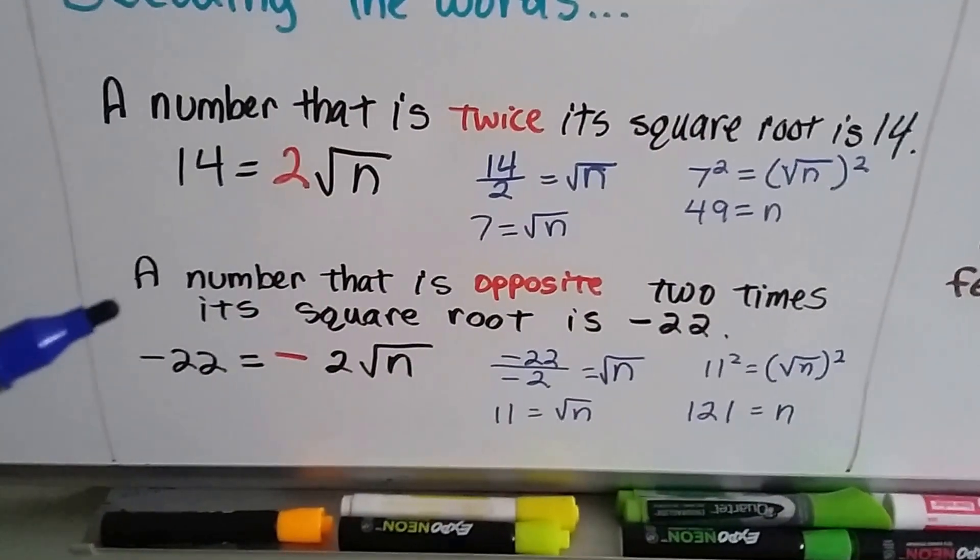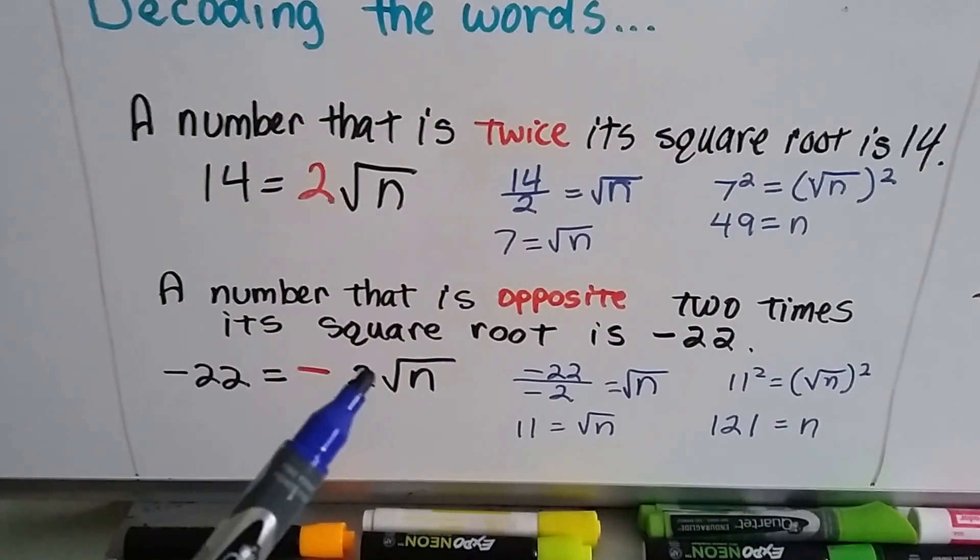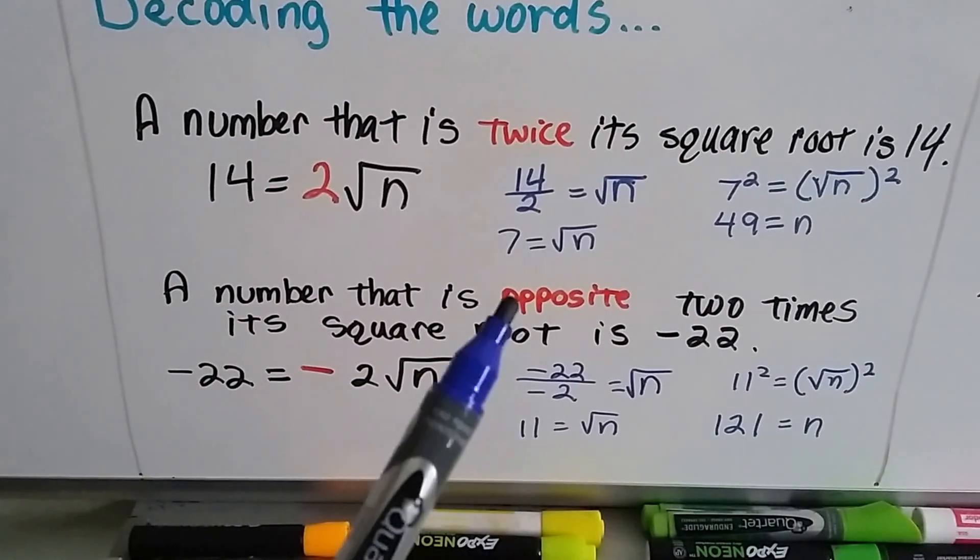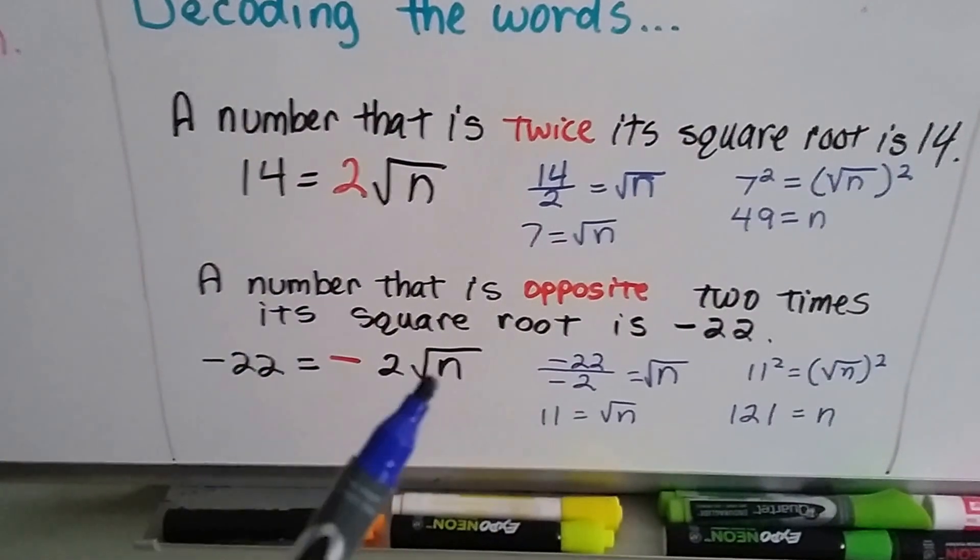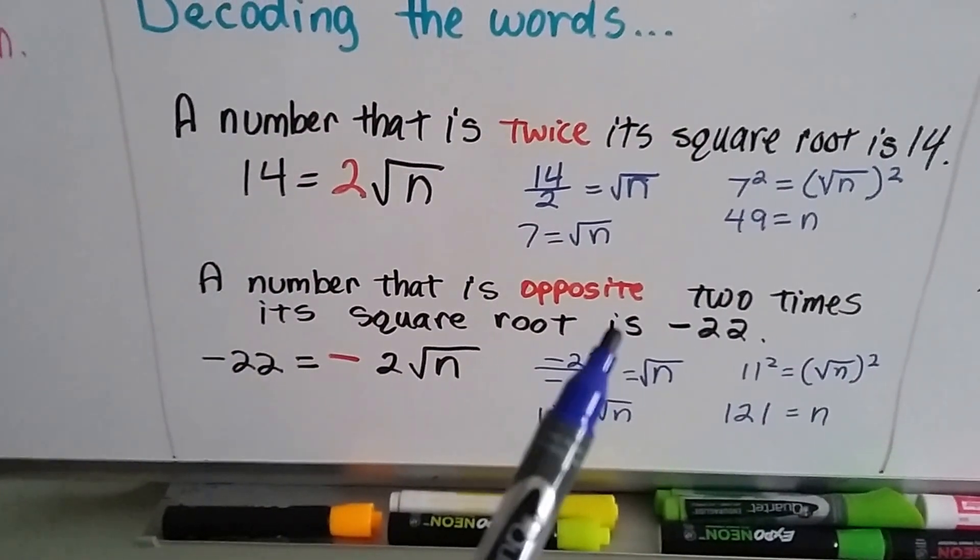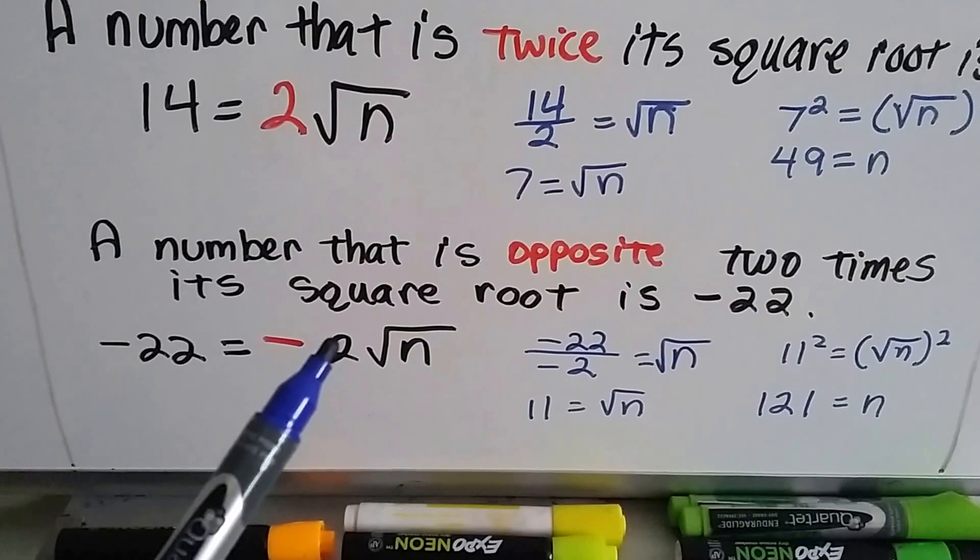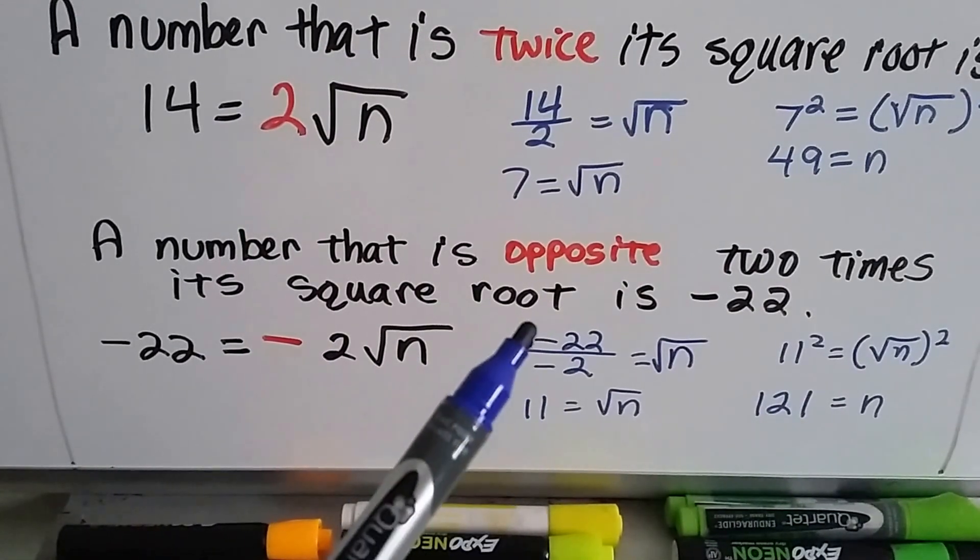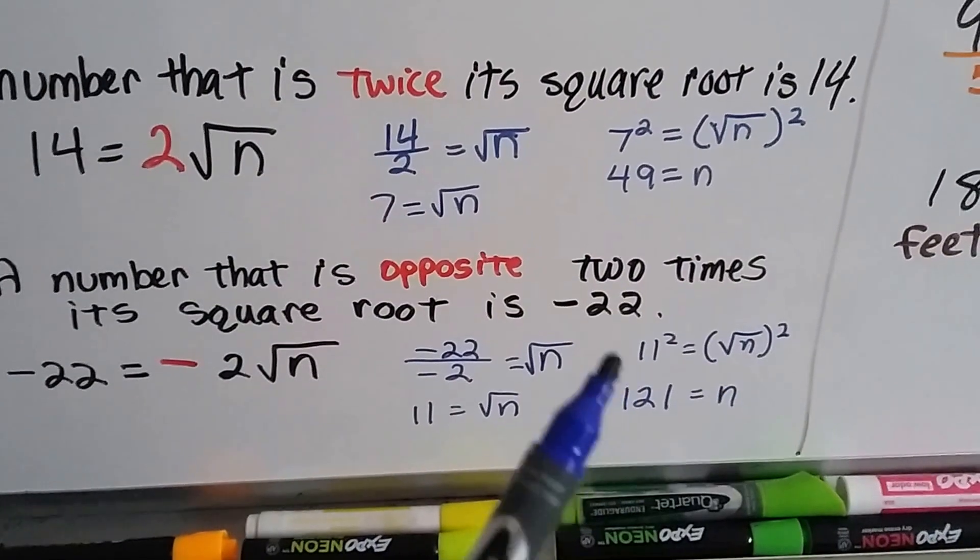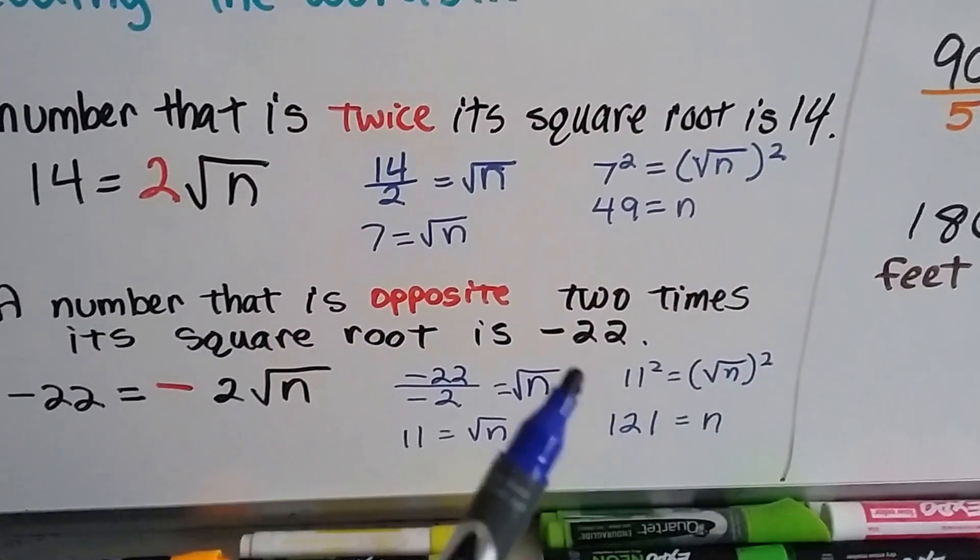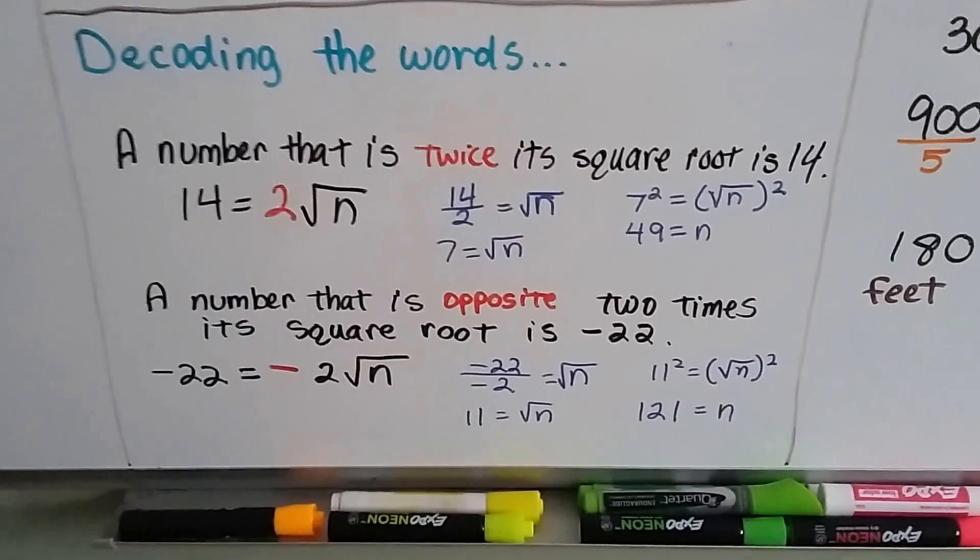If it says a number that is opposite 2 times its square root, a number that's opposite 2 times is minus 2 square root of n. If it said it was opposite 3 times, then it would be minus 3. If it was opposite 4 times, it would be minus 4. We don't know what the number is, so it's the square root of n, and it tells us it is negative 22. To solve this, we put the negative 2 as a denominator here, and divide negative 22 by negative 2. That makes a positive 11. Now we have 11 equals square root of n. We square both sides to remove the radical sign, and 11 times 11 is 121. It removes the radical sign, and we get n, so our answer is 121.